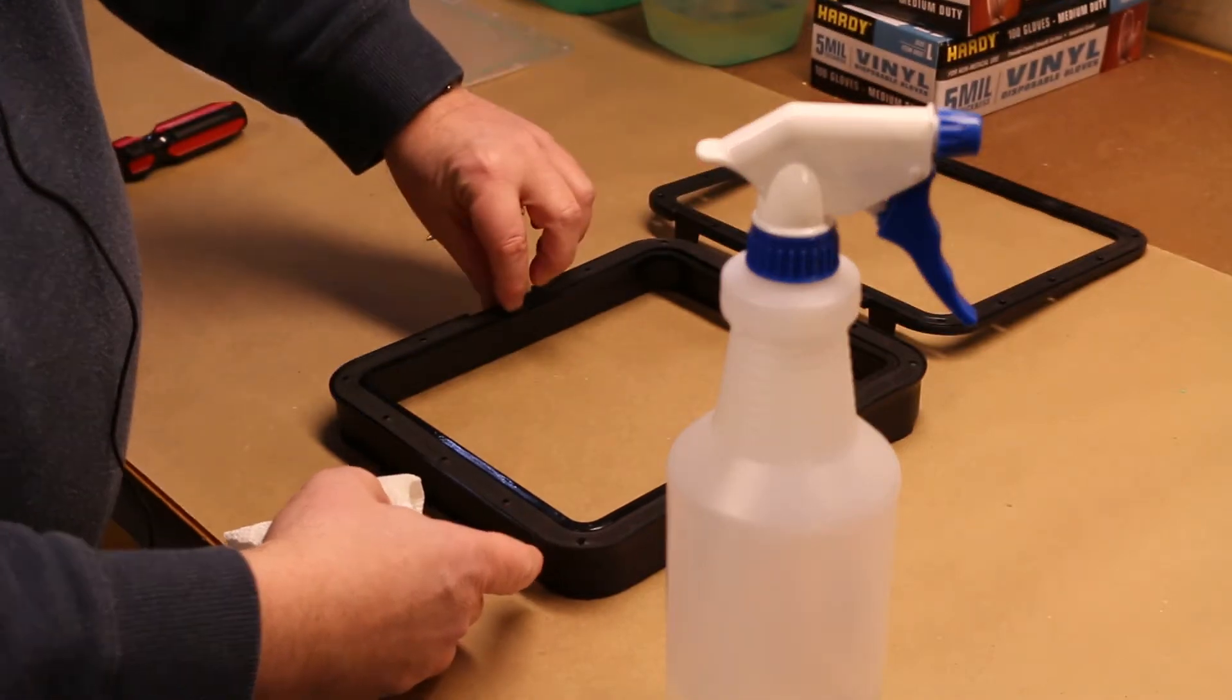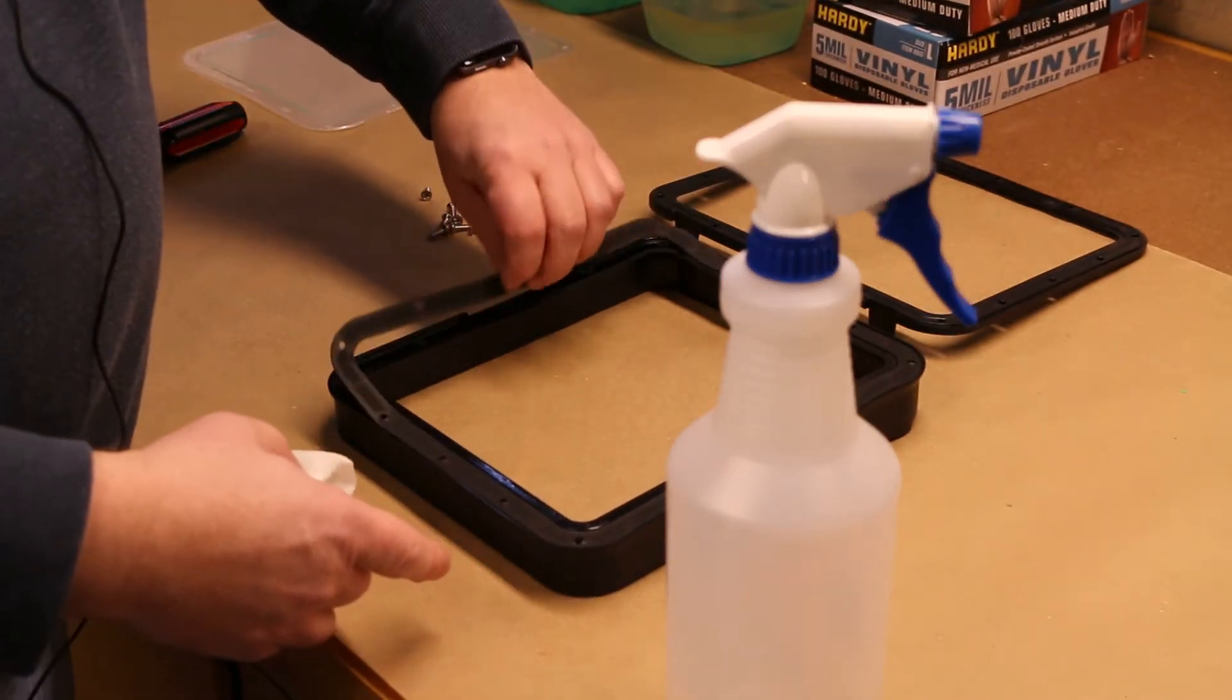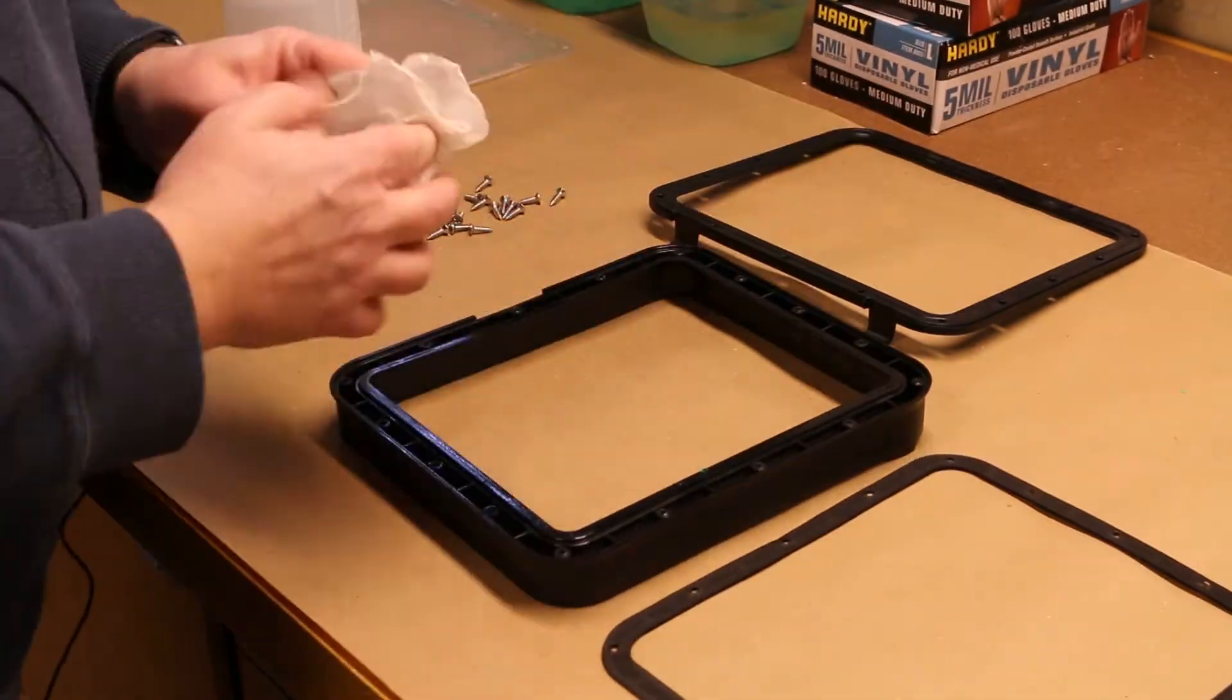I remove this foam gasket from around the perimeter of the tank. Then I clean up the tank a little bit more with some isopropyl alcohol.